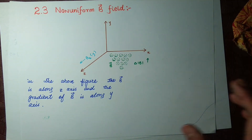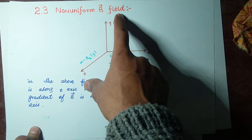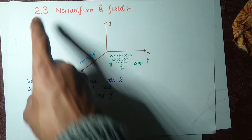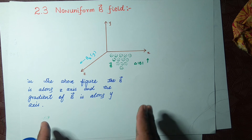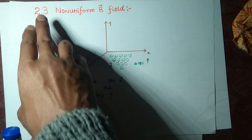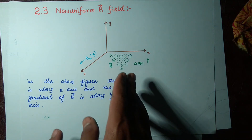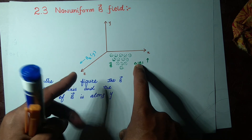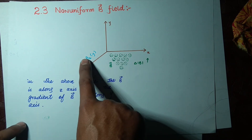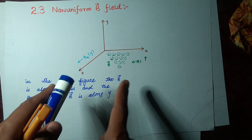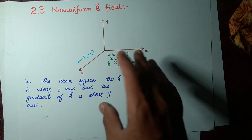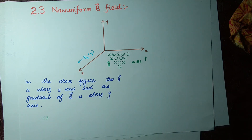This is the introduction to non-uniform magnetic fields. In our next lecture we are going to calculate the drift velocity for topic 2.3.1, where the gradient del dot B is perpendicular to the magnetic field. We will find out the value of the drift velocity. I hope you understand it — thank you very much for your time.